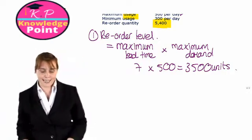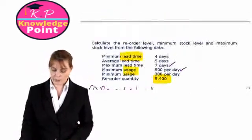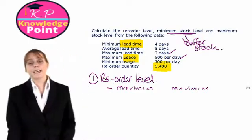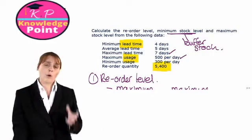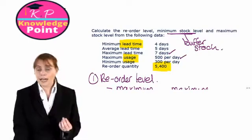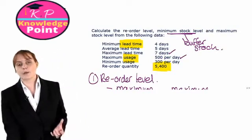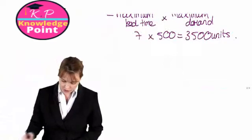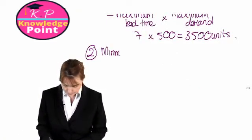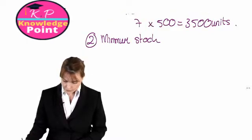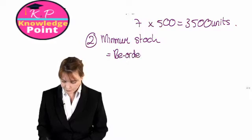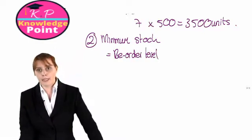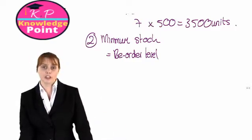The second thing we've been asked to calculate is the minimum, or buffer stock. The name 'minimum stock' is a little misleading — what we are actually calculating is, on average, how much stock we expect to have in our warehouse at the time our new order arrives. Minimum or buffer stock equals the reorder level minus average material usage during the lead time.